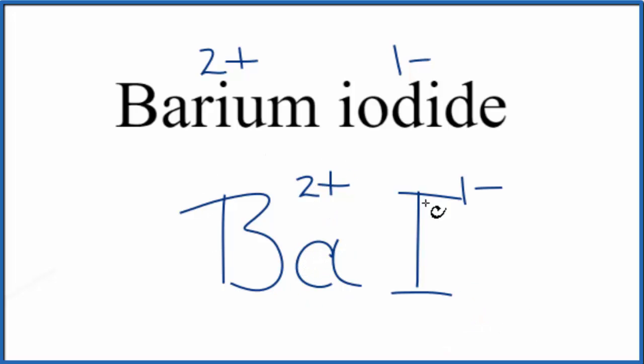You could also use the crisscross method. You could take the 2 and put it here, move the 1 here. So here, we don't write the 1 by convention. Let's get rid of these charges here. And that would give us the same thing, BAI2.